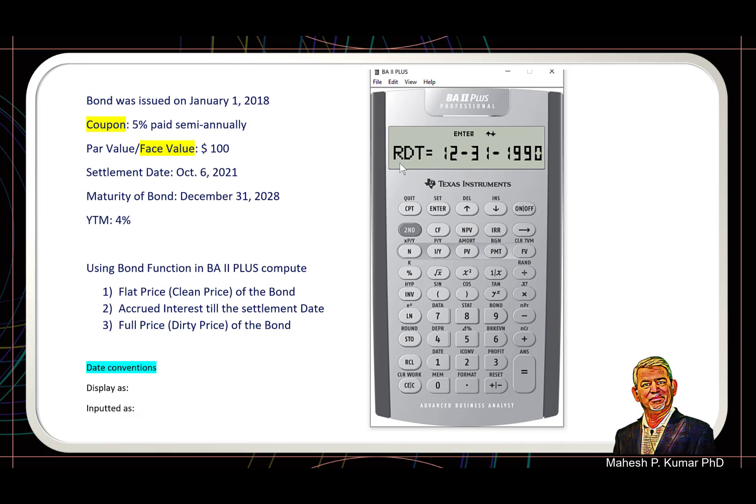And it is RD—this is the redemption date. So the bond is maturing on December 31st. First we enter this date: December, 12th month, date 31st, year 28. And then we enter. So now December 31st, 2028 has been entered into the calculator. Go down.